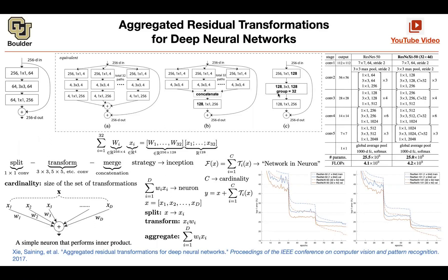There is another question: do each of those convolutions in the group convolution take the same input? Yes. They're all going to receive a tensor with height H, width W, and 256 channels. That same input goes to all of those convolutions.